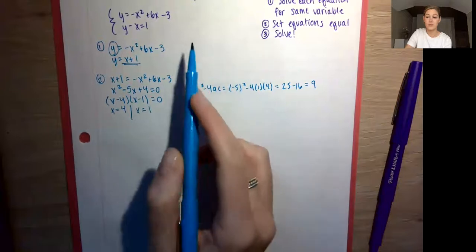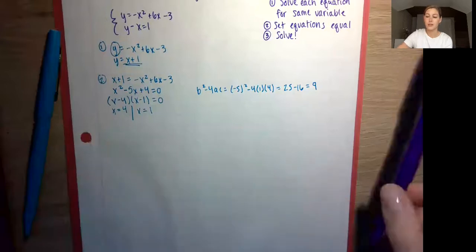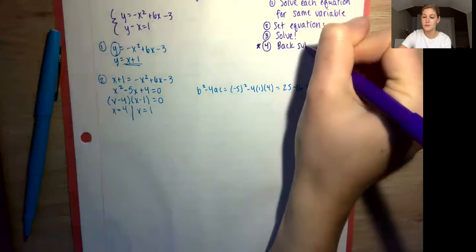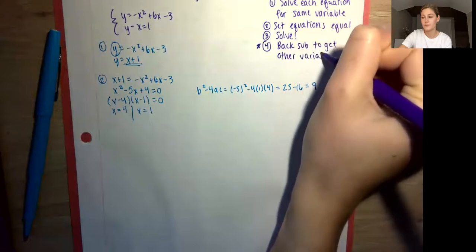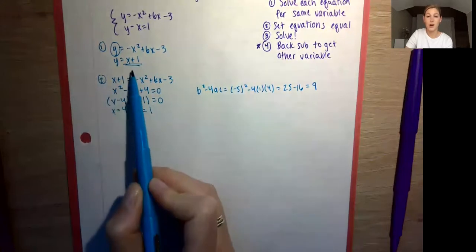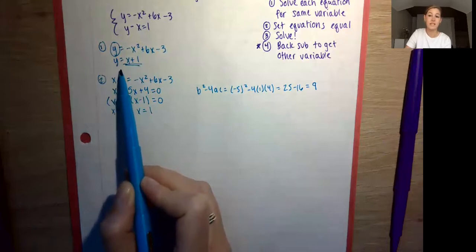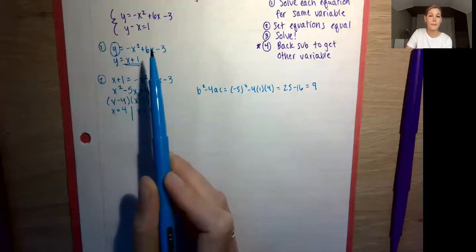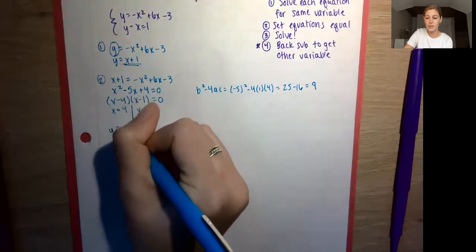We're not done, because we started with two variables, which means we need coordinate points. The last step — which a lot of people forget, so you might want to star this — is to back-substitute to get the other variable. We know our x values, so now we plug them back into y = x + 1. For x = 4: y = 4 + 1 = 5. For x = 1: y = 1 + 1 = 2.